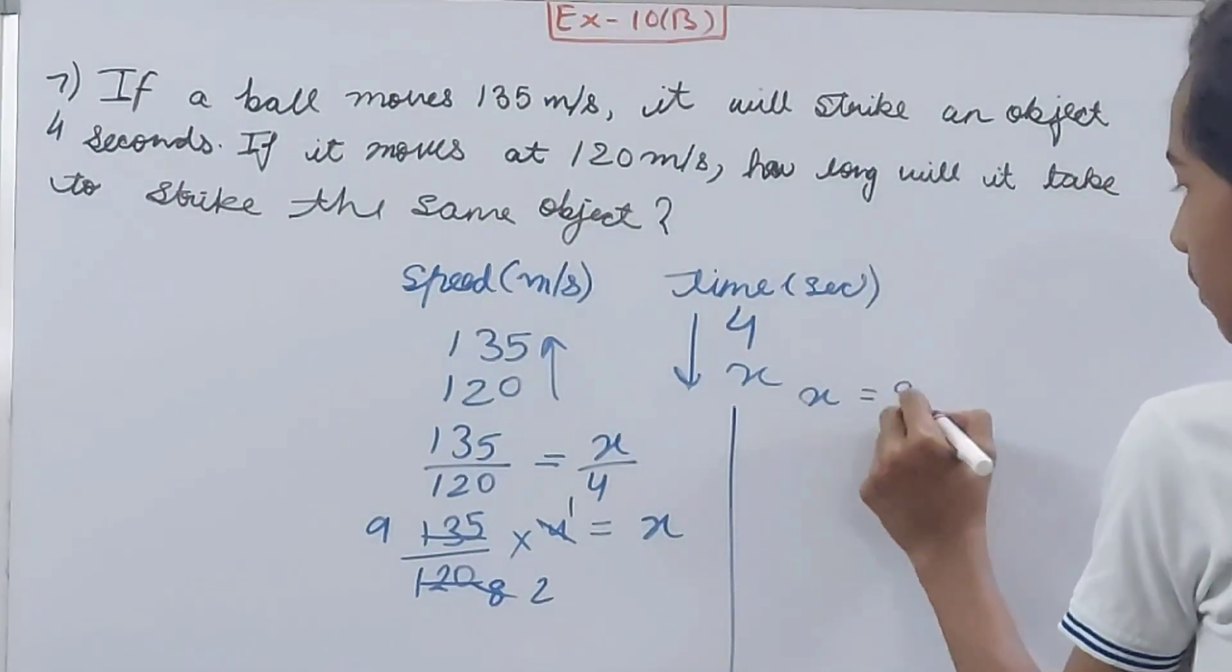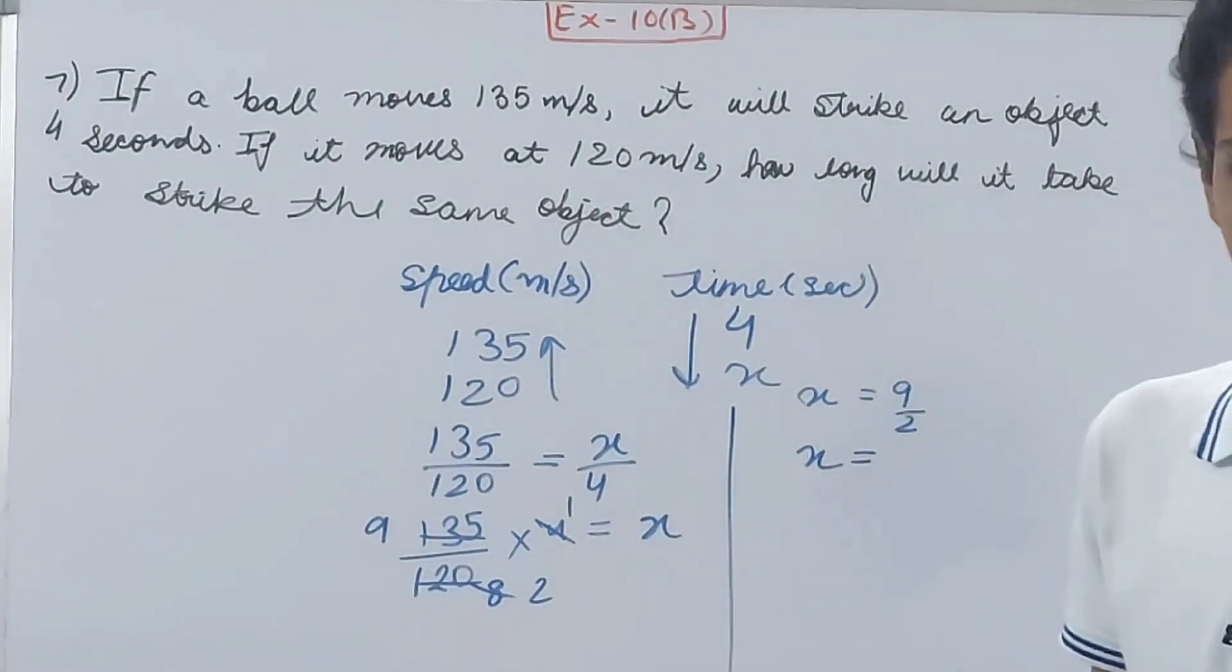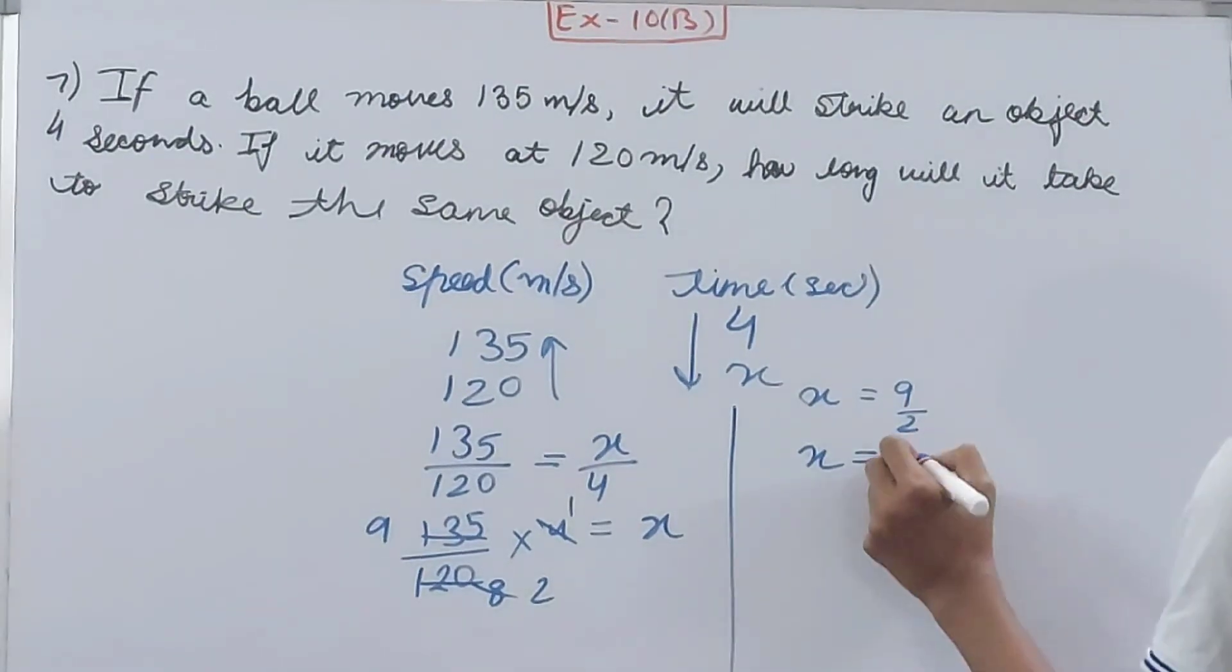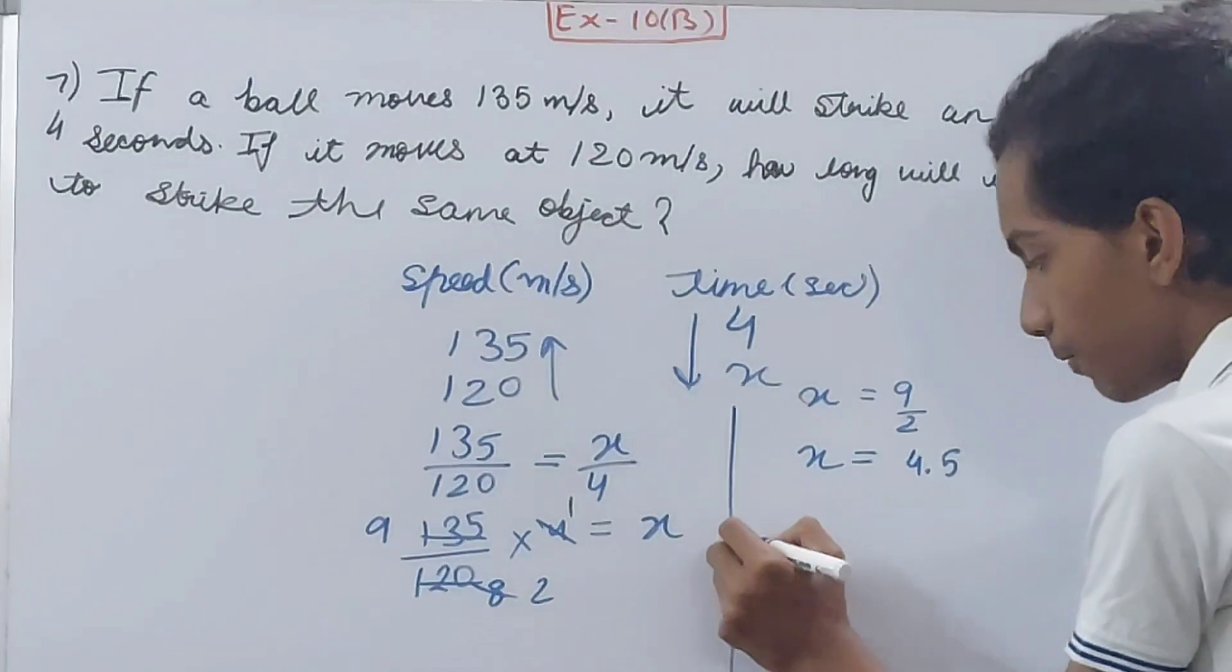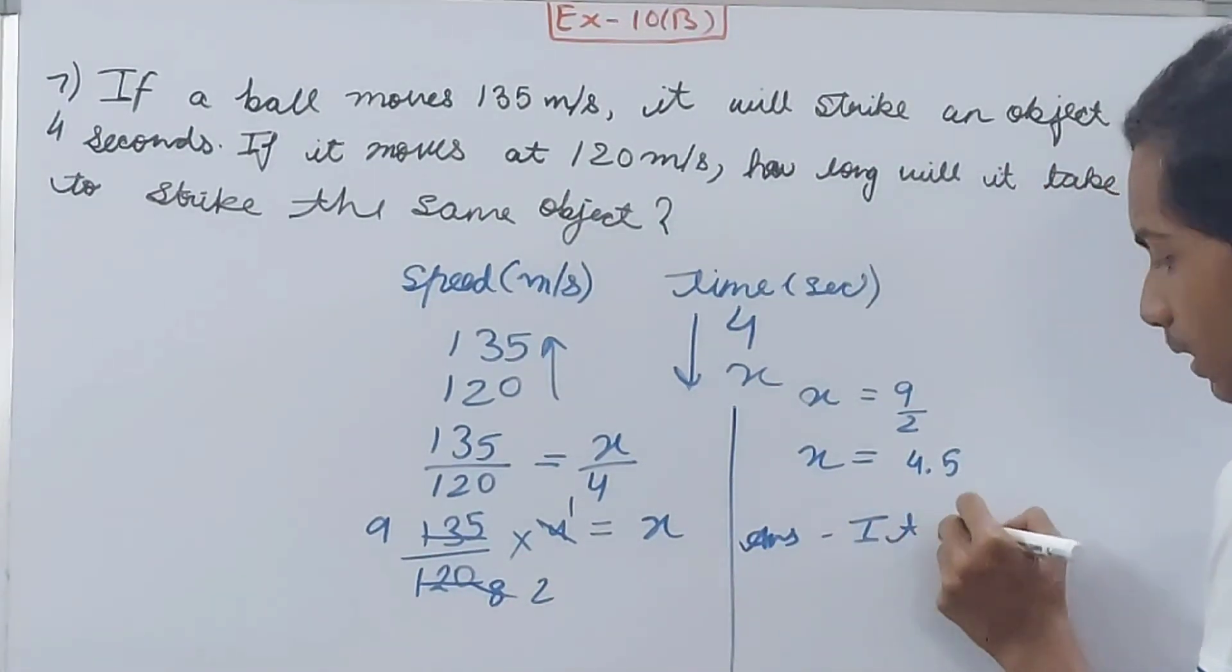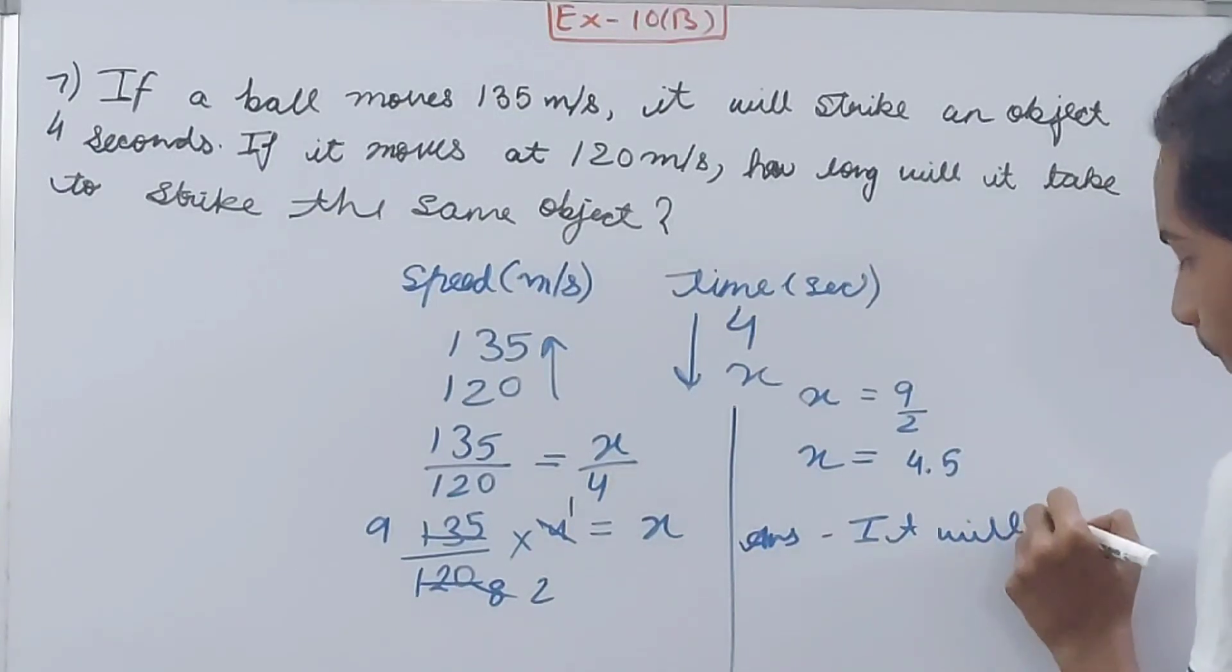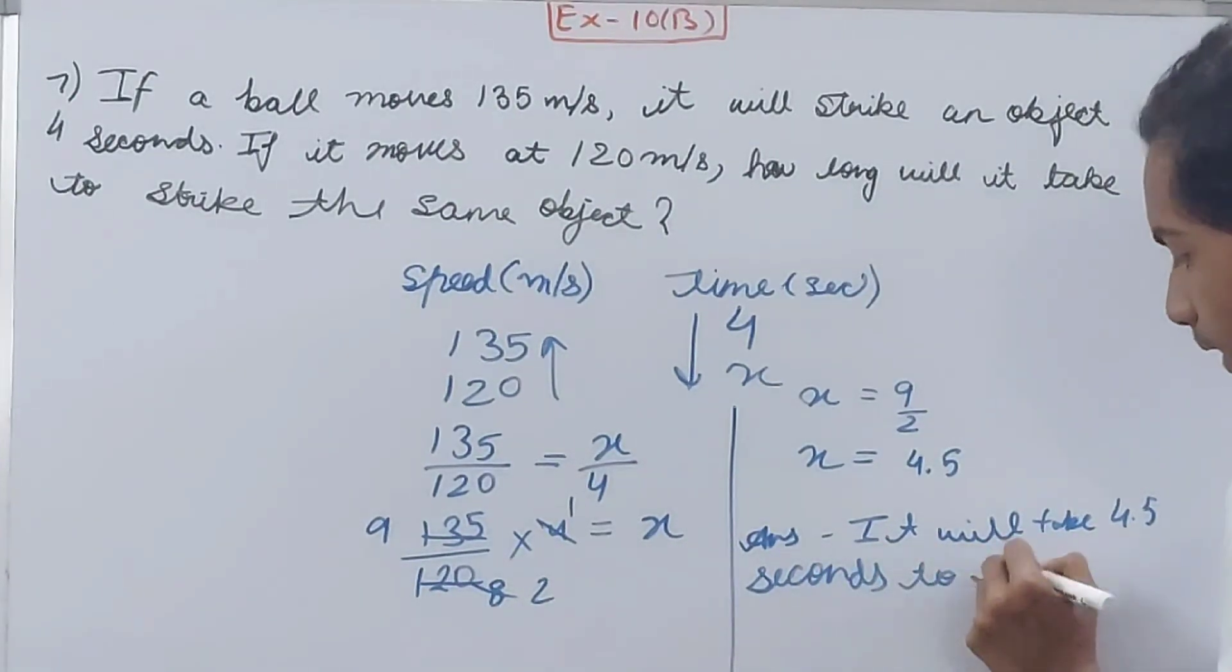So this you can make it in your decimals because speed is generally expressed in decimals. So we'll have 4.5. Therefore your answer will become: it will take 4.5 seconds to strike the object.